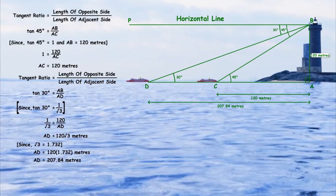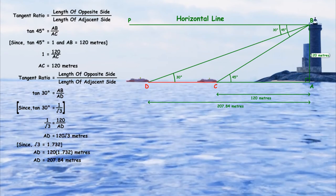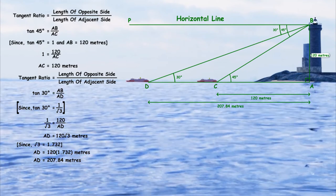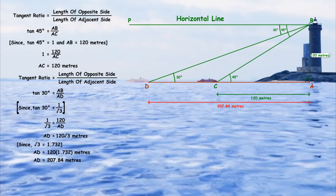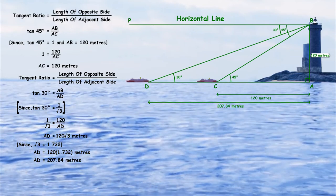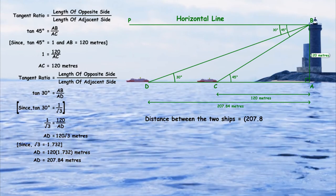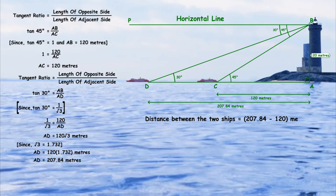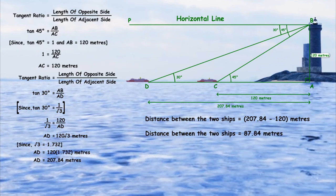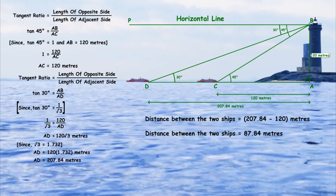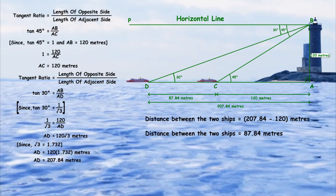Now, we have found the distance of both ships from the lighthouse. To find the distance between the two ships, we subtract the distance of the first ship from the lighthouse from the distance of the second ship from the lighthouse. Hence, the distance between the two ships is 207.84 − 120 = 87.84 meters. Hence, the two ships are 87.84 meters away from each other.